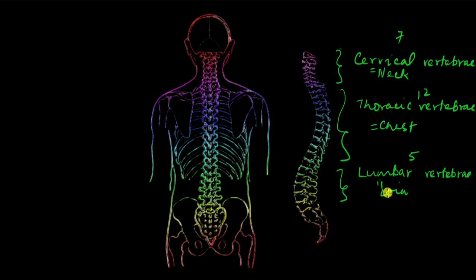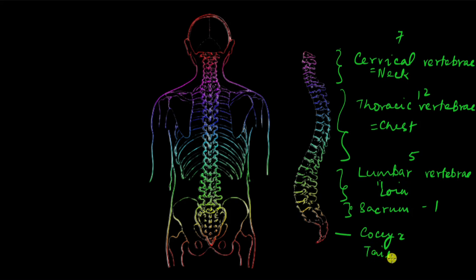Lumbar relates to loin, the lower abdomen region, so that's what the lumbar vertebrae support. Below the lumbar vertebrae is the sacrum — in other animals there used to be separate vertebrae here, but in us they have fused into one single vertebra forming the base of the vertebral column. The last vertebra is the coccyx, also known as the tailbone. Like the sacrum, the coccygeal vertebrae have fused into one bone. In us it has absolutely no function — it's a vestigial organ since we don't have a tail.